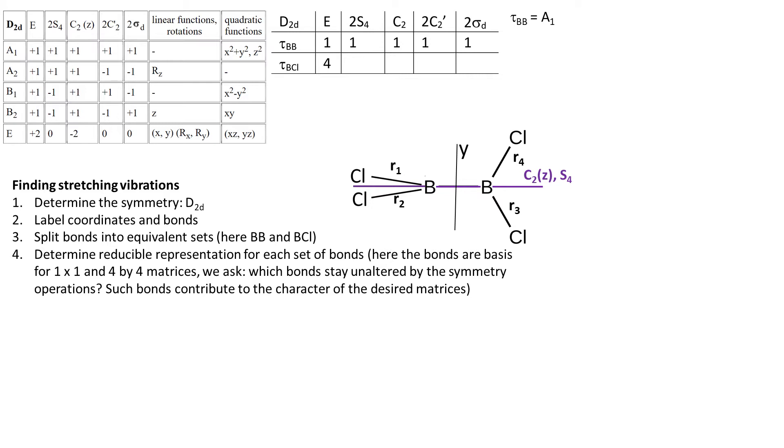Now let's think about improper rotations S4. Please recall that S4 is a composite operation made of C4 rotation along the Z axis followed by reflection in a plane perpendicular to the axis of rotation. Obviously all the BCl bonds change place, so the character is 0.